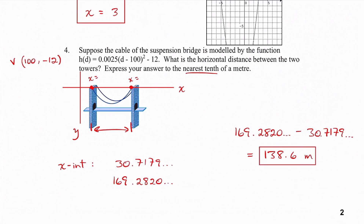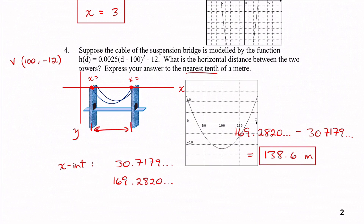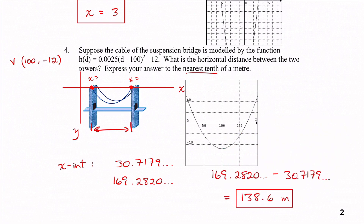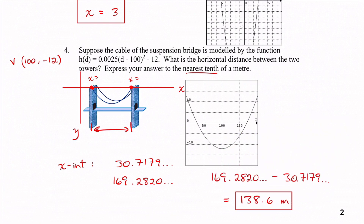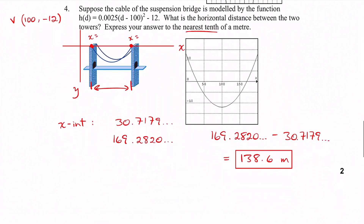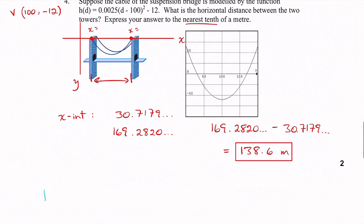So the graph of the cable function shows the parabola, and the distance between the two towers where the cables are anchored is approximately 138.6 meters. The last thing to note is the textbook questions that follow.